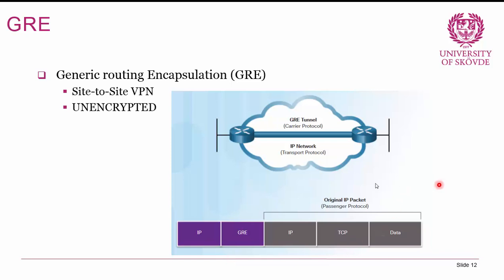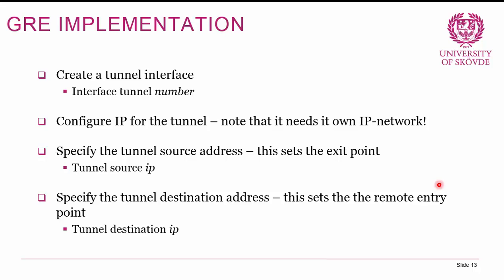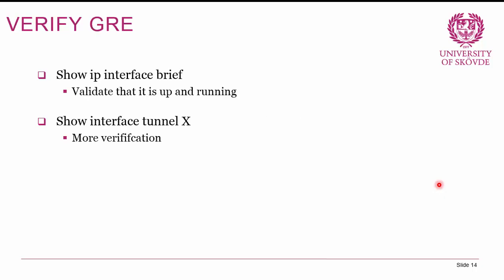To configure a GRE tunnel, first create a tunnel interface with 'interface tunnel' and a number. Configure it like a normal interface with an IP address — note it needs its own IP network since the tunnel becomes a point-to-point connection. Specify the tunnel source address using 'tunnel source' and the IP or interface, which sets the exit point from the router. Then specify 'tunnel destination' with the remote endpoint IP address. For verification, use 'show IP interface brief' and 'show interface tunnel' with the tunnel number.